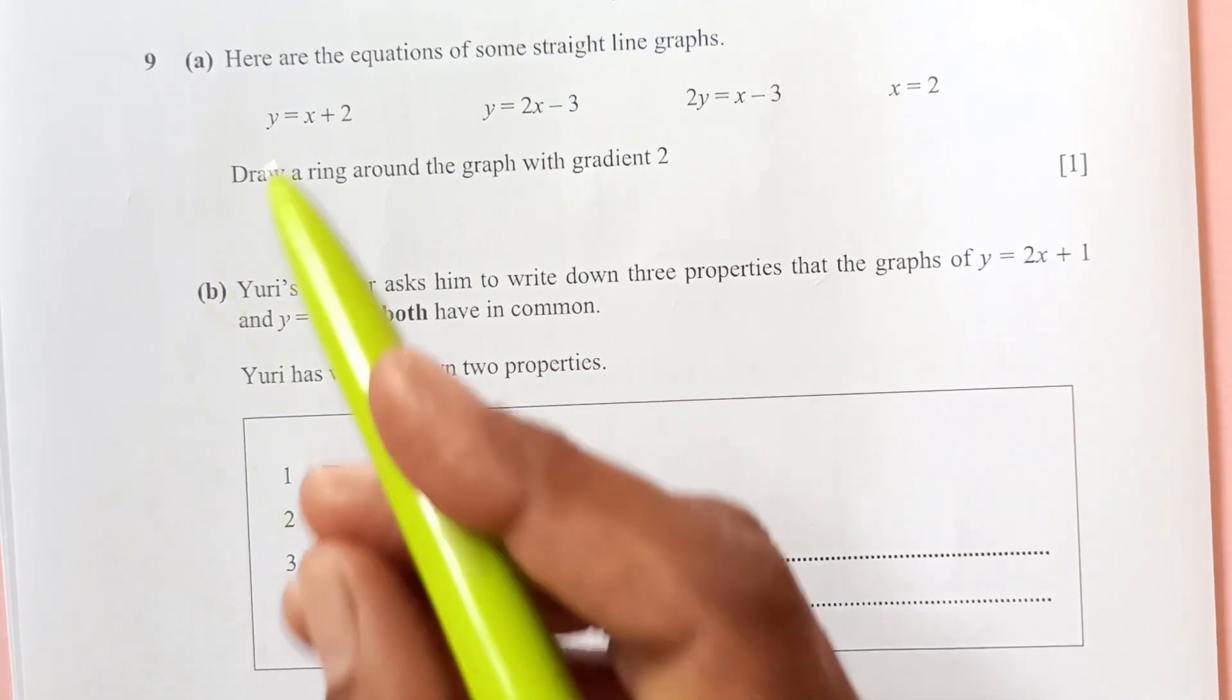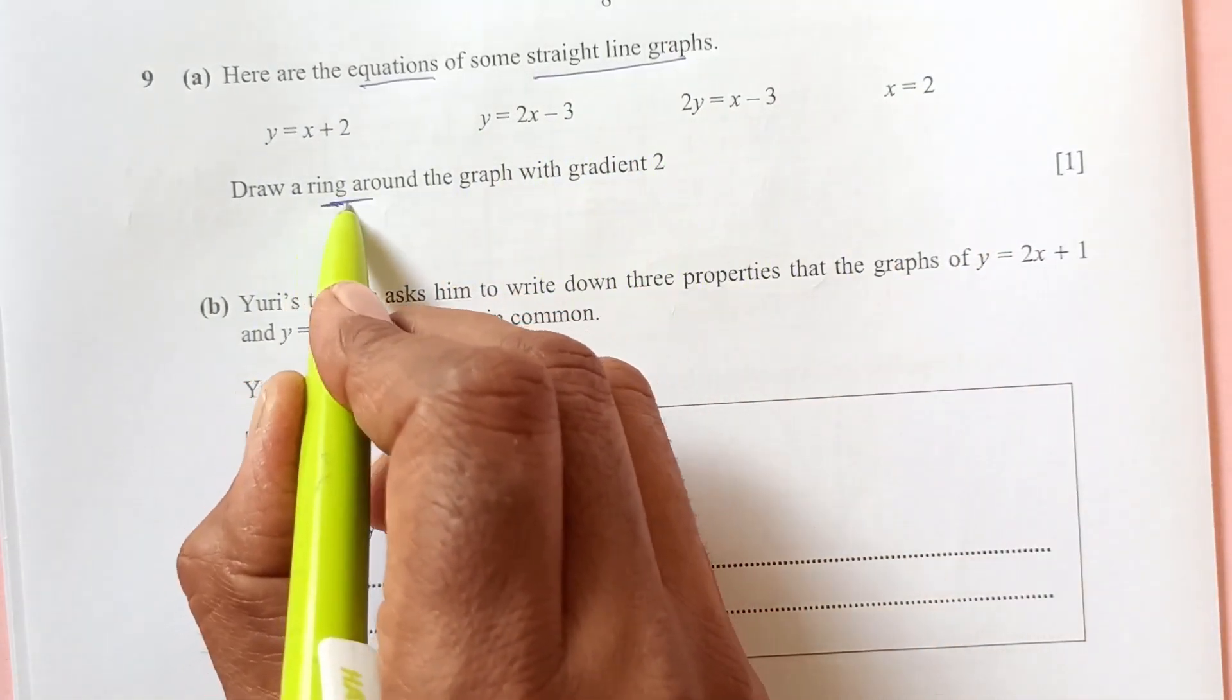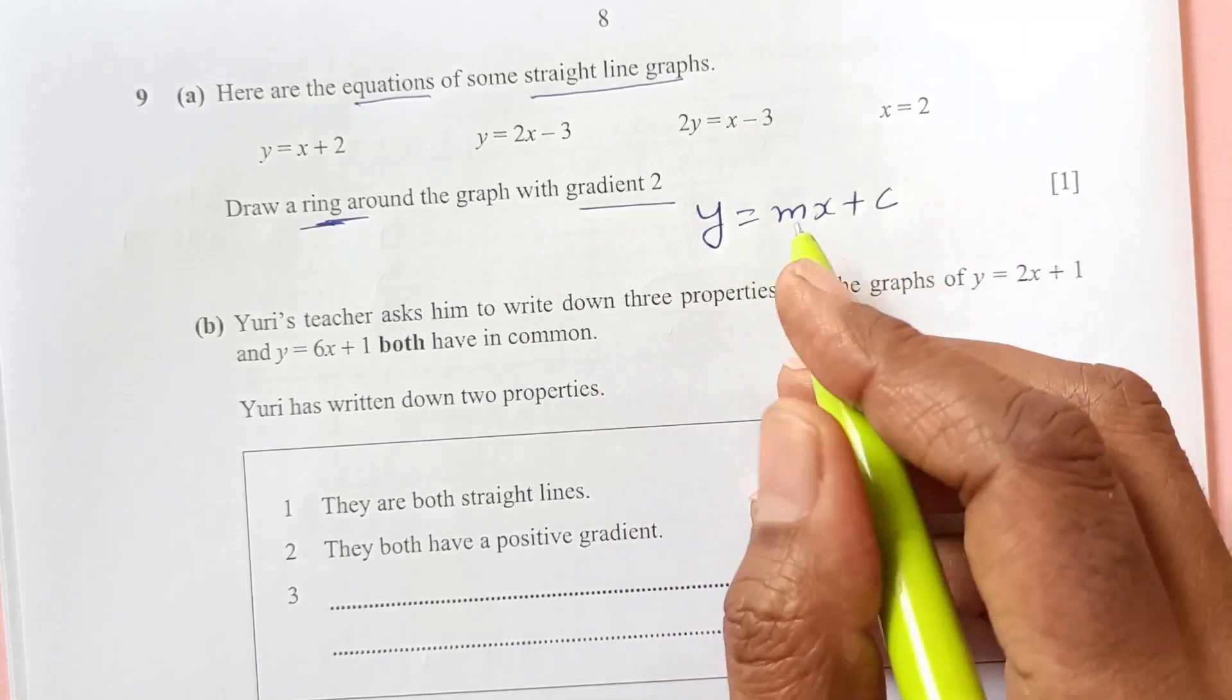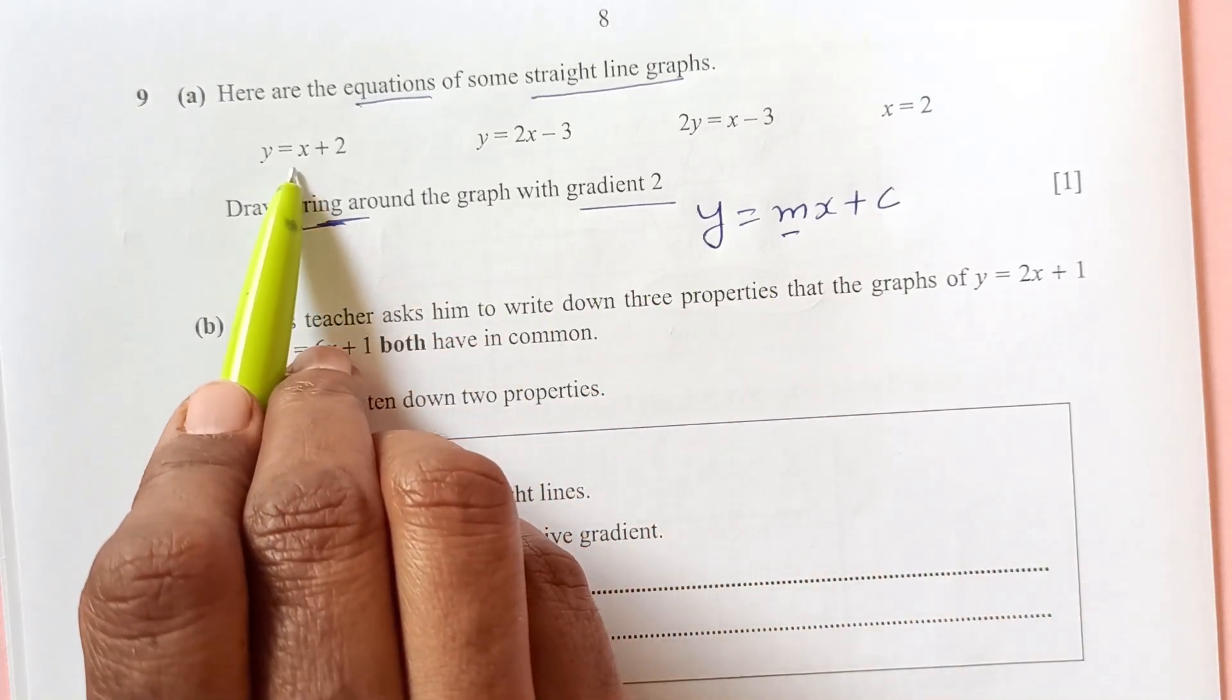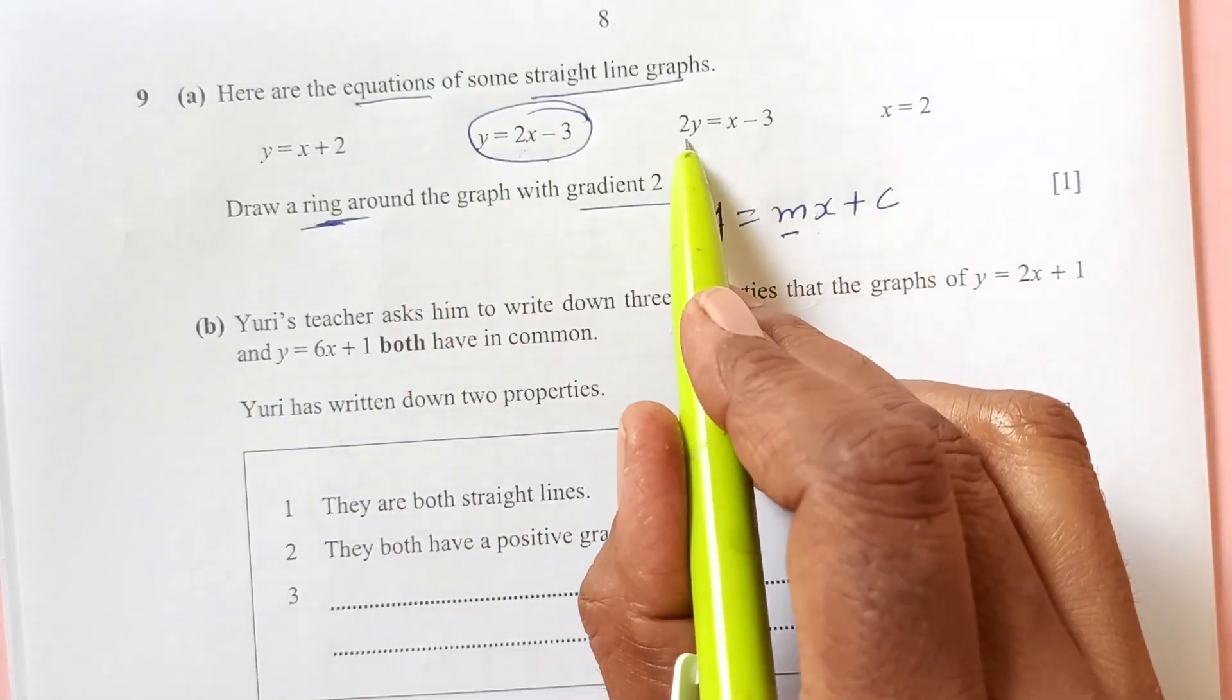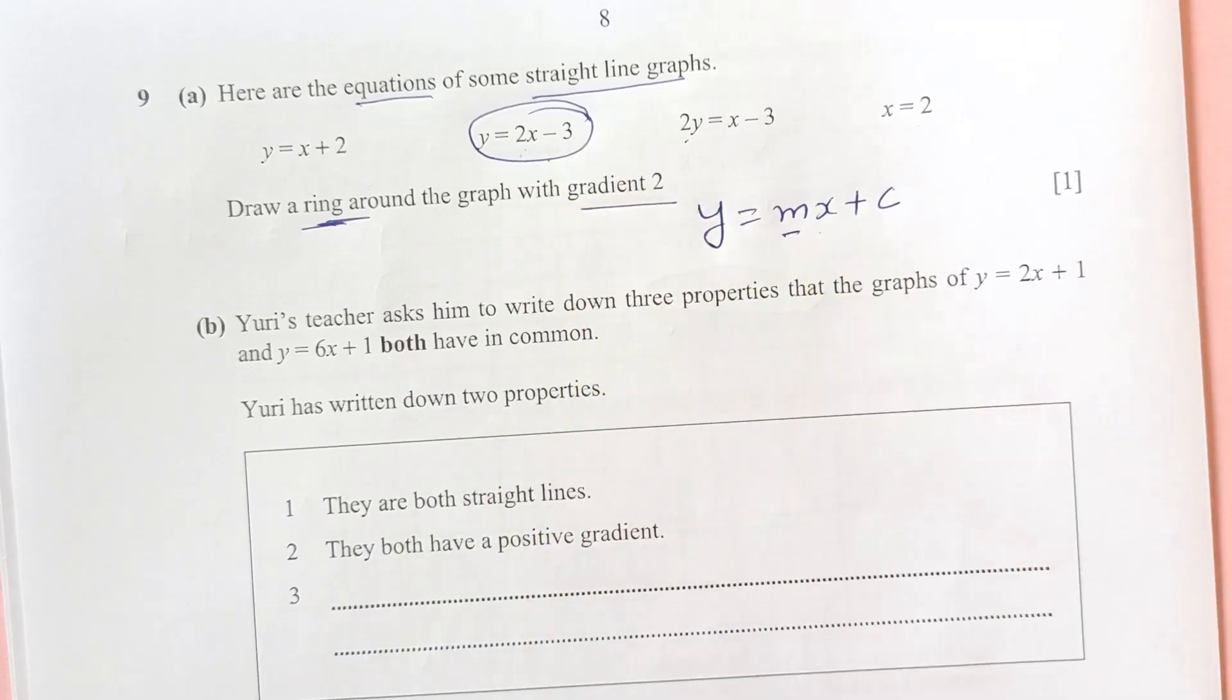Number 9. Here are the equations of some straight line graphs. We have these 1, 2, 3, 4 equations. Draw a ring around the graph with gradient 2. Standard form of equation of line is y equals to mx plus c, where m is the gradient. So, mx plus c. With gradient 2. So, here we have this one, y equals to 2x. And here is y, when you bring 2 down here, it will become x/2. And this is x equals 2. So, this is the only line that has gradient of 2.